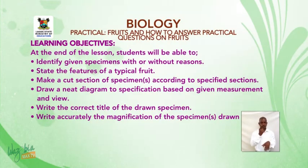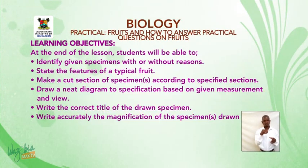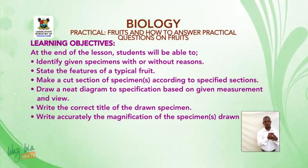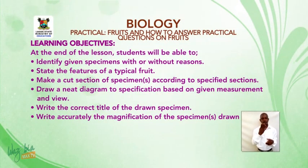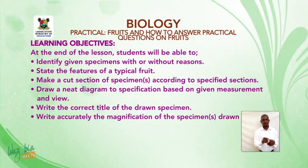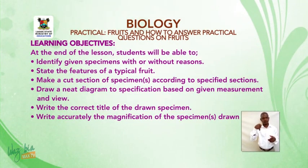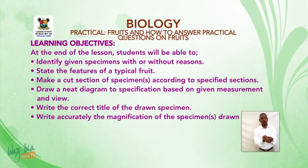Learning objectives: At the end of the lesson, students will be able to: 1. Identify given specimens with or without freezing. 2. State the features of a typical fruit. 3. Make a cut section of a specimen according to specified section. 4. Draw a neat diagram to specification based on given measurement and view. 5. Write the correct title and magnification of the drawn specimen.